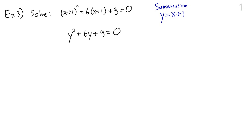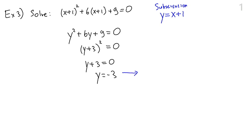This is a regular quadratic equation we can solve by factoring. It is a perfect square trinomial: y plus 3 squared equals 0, which gives y plus 3 equals 0, so y equals negative 3. It is tempting to stop here, but our original equation was in x's. Using the substitution y equals x plus 1, we have negative 3 equals x plus 1, so x equals negative 4. That is the final solution.